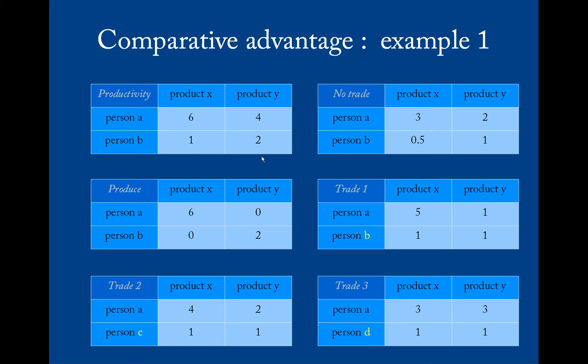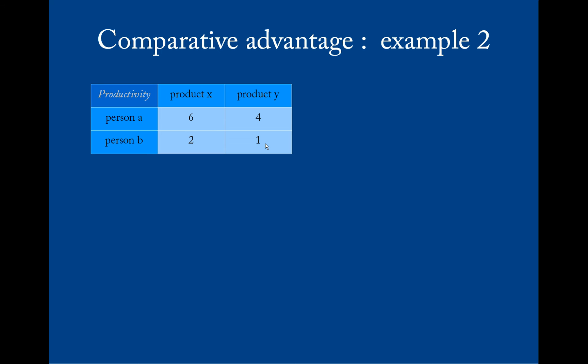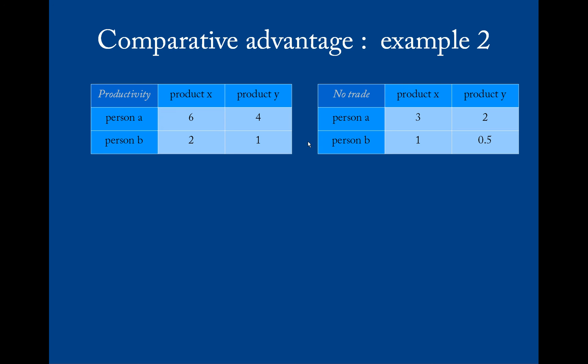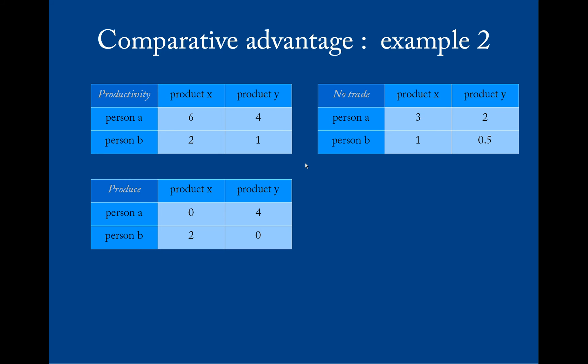Now let's change the situation again where person B makes two X in a day and one Y in a day. If they split their energy in half again for different products, six becomes three, four becomes two, two becomes one, one becomes a half. Now they should both produce what they are best at comparatively. That is to say, person A is four times better at producing Y and only three times better at producing X. This means person A should produce Y and person B should produce X where his disadvantage is the smallest.